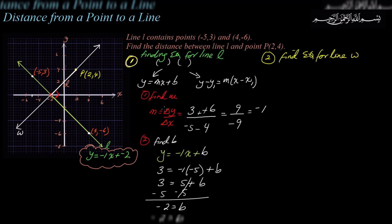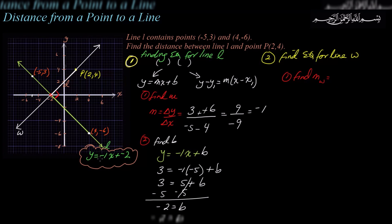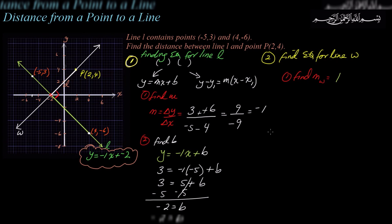There are only two steps in finding the equation of any line, so we'll do the same thing here. We need to find the slope of line W. Since it's perpendicular to line L whose slope is negative 1, the slope of W is the negative reciprocal of negative 1. Flipping negative 1 gives 1 over negative 1, and taking the negative reciprocal gives us 1. So the slope of line W is 1.